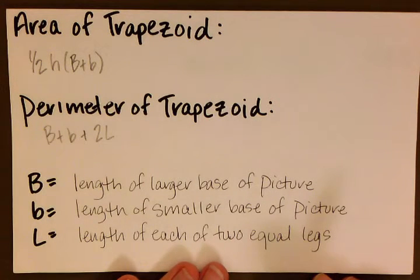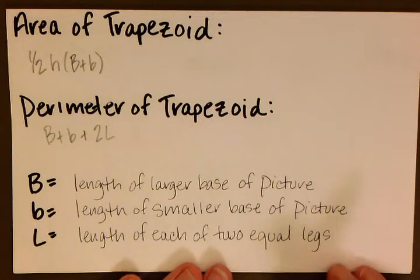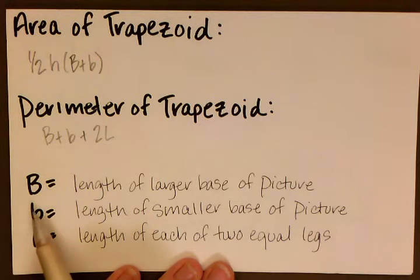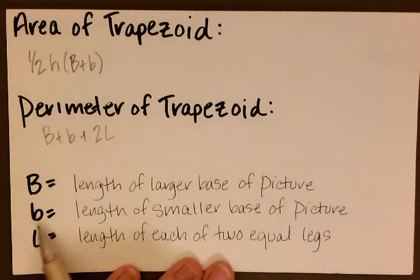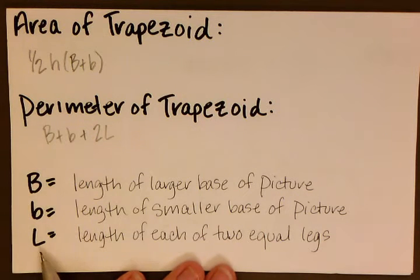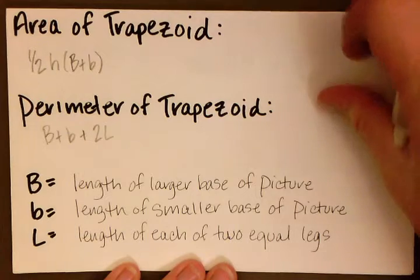Trapezoids have two bases, so we label one with an uppercase B and the other with a lowercase b. The uppercase B is the length of the larger base of the picture. The lowercase b is the length of the smaller base of the picture. And remember that the L is the length of each of the two equal legs.